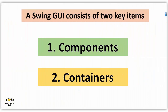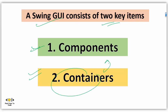Before going to code, you must know about the two key items of the Swing GUI. A Swing GUI consists of two key items: first is Components, and second is Containers. Ultimately, containers are also components, but what is the difference between normal components and containers?